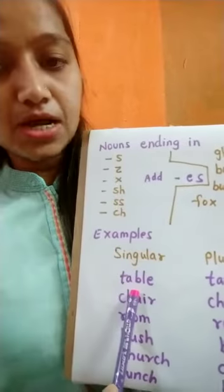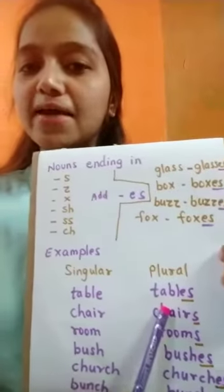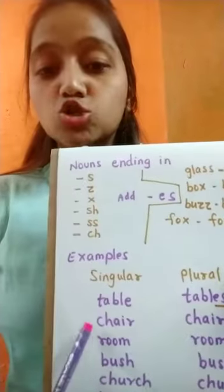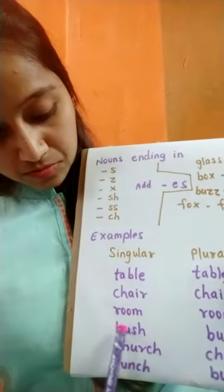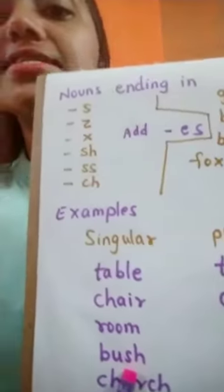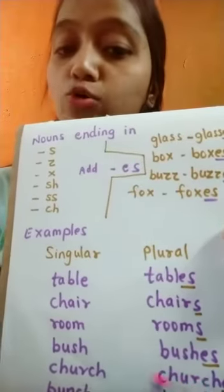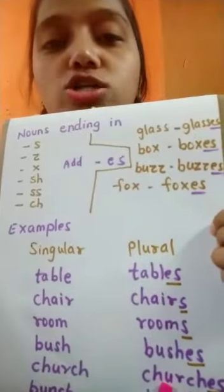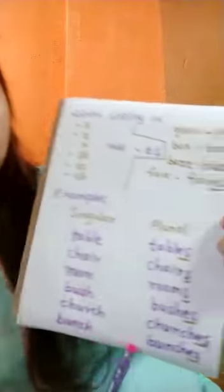For example, you can see the words given here. Singular: table — but here we are not adding ES because E has already been given, so we just make 'tables.' Chair becomes chairs. Room becomes rooms. Bush — this is ending with SH, so making it plural I have added ES: bushes. Church becomes churches. Bunch becomes bunches.